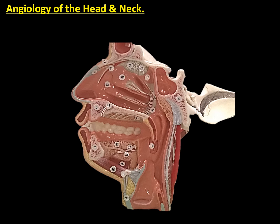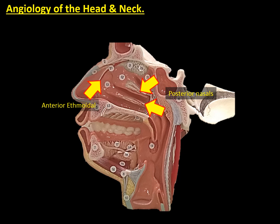The sphenopalatine artery is getting into the nasal cavity and giving blood supply to the dorsal part, represented by the branches called the posterior nasal arteries. Regarding the anterior region, it has the blood supply from the anterior ethmoidal artery, which belongs to the ophthalmic artery and this one to the internal carotid artery. Coming out of the anterior ethmoidal artery, we observe the external nasal artery, which is going to cross the cartilage of the nose and get to the superficial part of the nasal cavity.